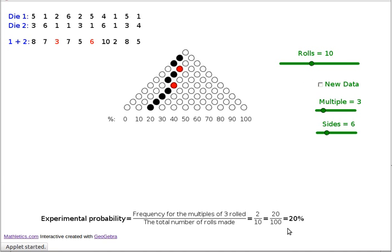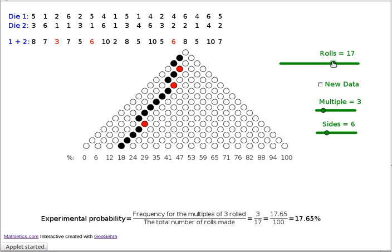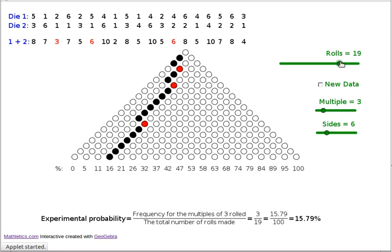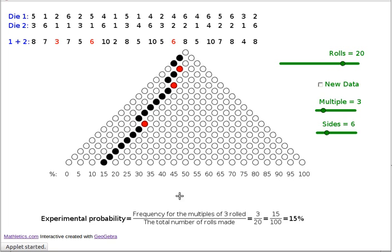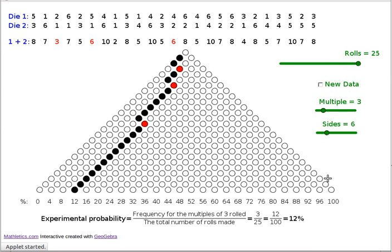After 10 rolls, we've got 20%. After 15 rolls, we've still got 20%. 3 out of 15 were yeses. After 20 rolls, we've got 3 out of 20, down to 15%. After 25 rolls, we're down to 12%.